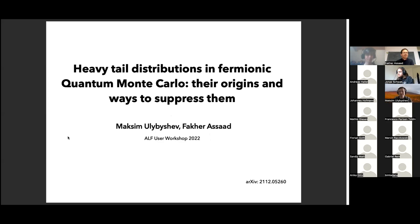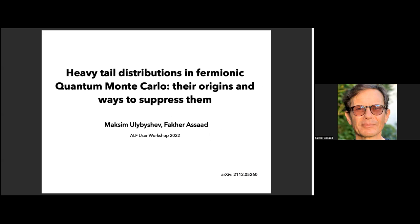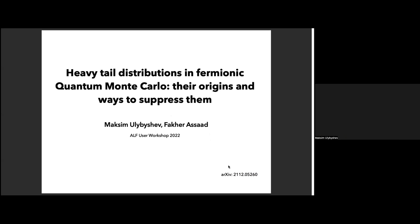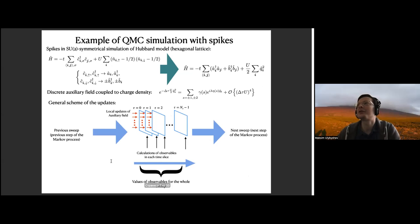This talk is partially based on our recent preprint, so if anybody is interested, you're welcome to read it. There are maybe more formulas and more text needed to explain things. Let me start from one example of simulation where we have spikes, in order to explain what they are and why they can cause some issues in simulations.